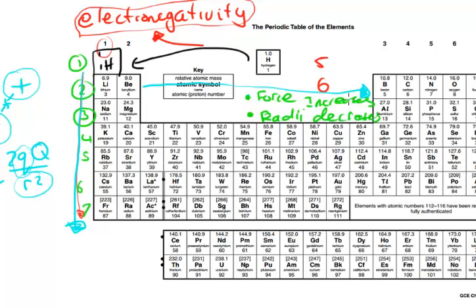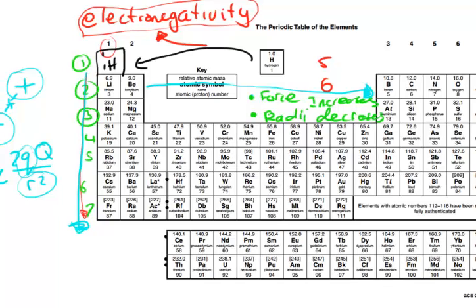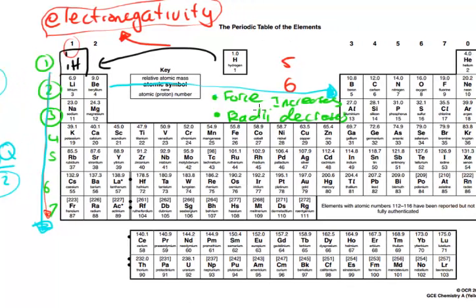I know I'm not going straight into the definition of electronegativity, but I think this intuition behind it is important. As the force increases, the radii decreases — so as we go along, the sizes get progressively smaller. And because of that increased force, the ionization energy also increases across the period.